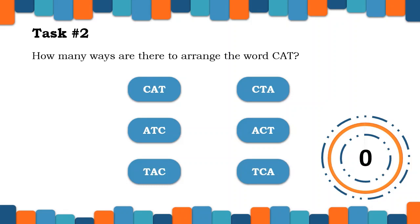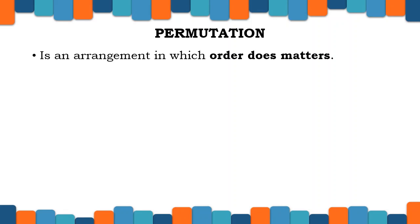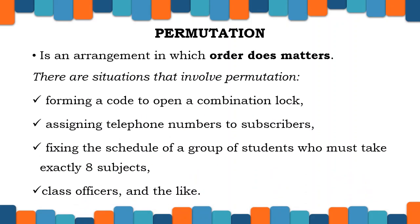How did we do this? We did this by the process of finding the possible arrangements of the word or set of objects. A set of N objects to be arranged is called Permutation. It is an arrangement in which order does matter. There are situations that involve permutation: forming a code to open a combination lock, assigning telephone numbers to subscribers, fixing the schedule of a group of students who must take exactly 8 subjects, and class officers and the like.